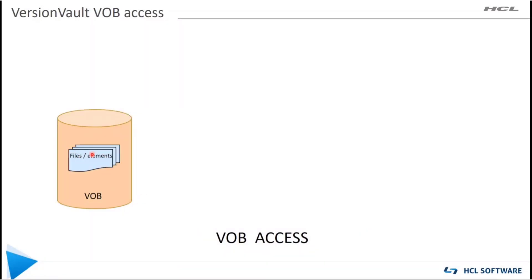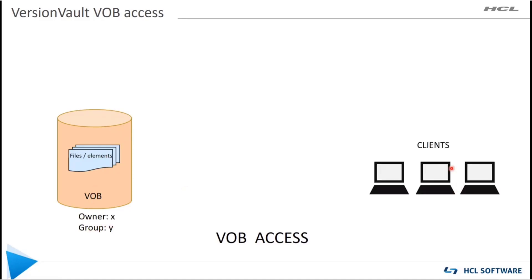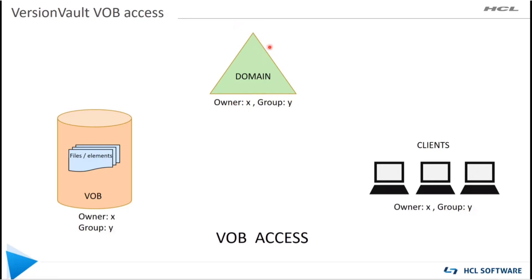Let's take an example of a VARB which has a couple of file elements in it and owner and group information attached to it. There are a couple of clients belonging to the same ownership and group information. There is a domain from where the ownership and group information are coming from. In case of Windows, it can be Active Directory, and for Unix, it can be NIS domain. If the clients are trying to access the VARB, it will fetch the ownership and group information from the domain and compare it with what exists on the VARB.